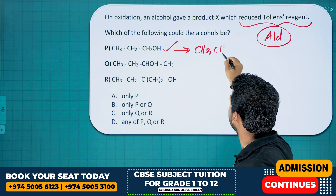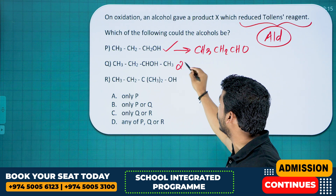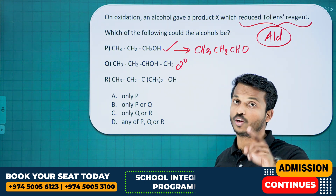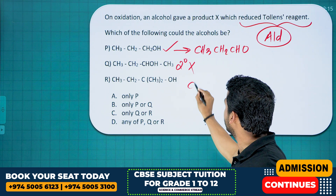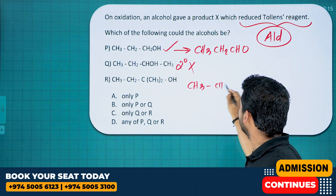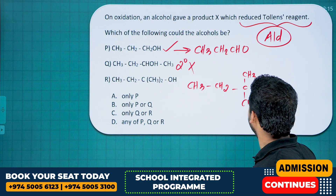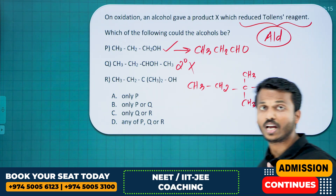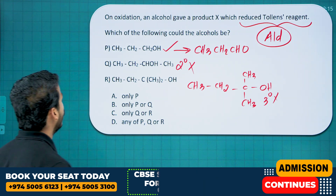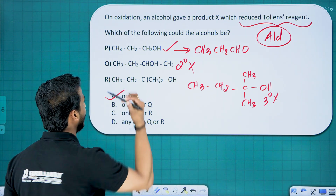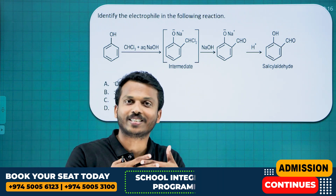One option is a secondary alcohol — it gives a ketone, and ketones do not reduce Tollens' reagent, so not that one. Another compound, CH3CH2C(CH3)2OH, is a tertiary alcohol — tertiary alcohols do not undergo oxidation, they undergo dehydration instead. So only option P is the answer, connecting the alcohol chapter with the aldehyde chapter.